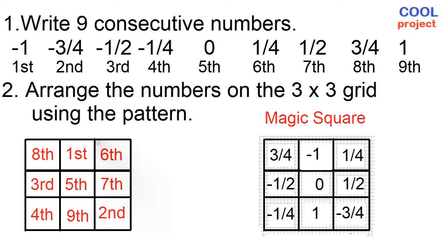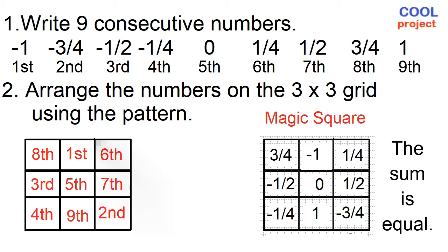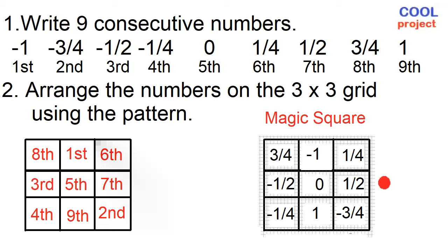Now let's find the magic sum. The sum of each of the rows, each of the columns, and each of the diagonals should be equal. Let's add: 3 fourths plus negative 1 plus 1 fourth equals 0; negative 1 half plus 0 plus 1 half equals 0; negative 1 fourth plus 1 plus negative 3 fourths equals 0.